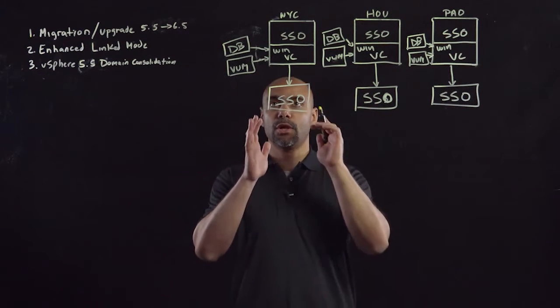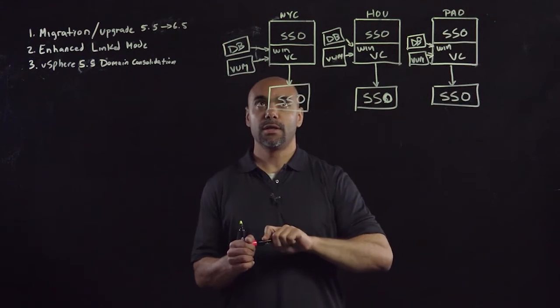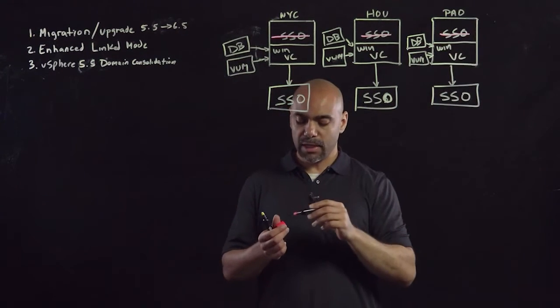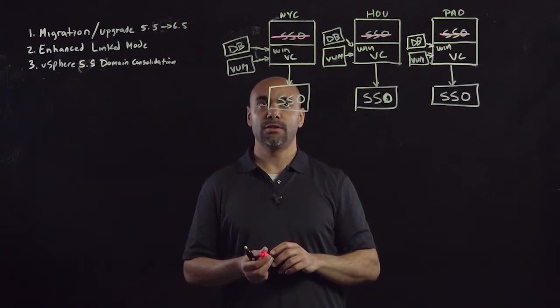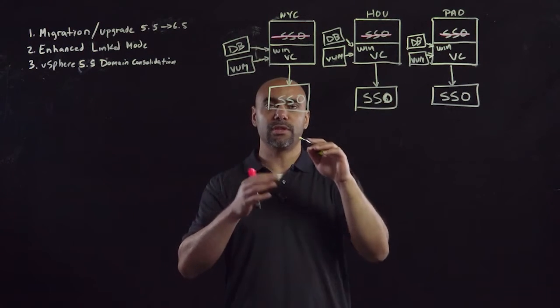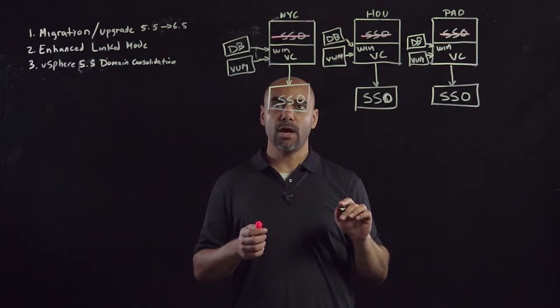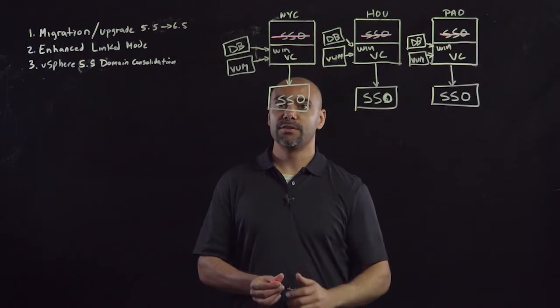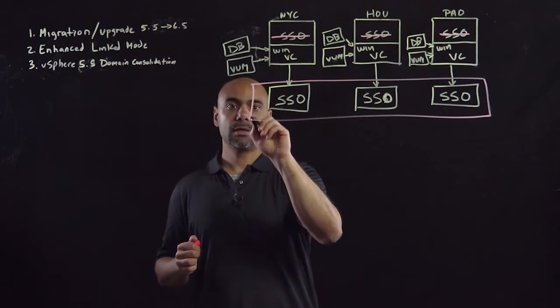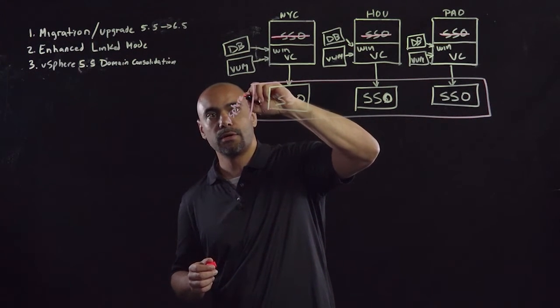So now we've externalized, we've pointed our services. The next thing we need to do is we actually need to uninstall the embedded SSO on the first deployment. So we're going to do that at each site. And the reason we're doing that is when you do an upgrade or a migration, the installer is going to go through and look, and if it sees that embedded SSO, it's going to use it and it will cause you troubles later because in reality you're pointed down to that external SSO. So we're going to uninstall it. And now we have a consolidated SSO. And just for namesake, this is vSphere.local.